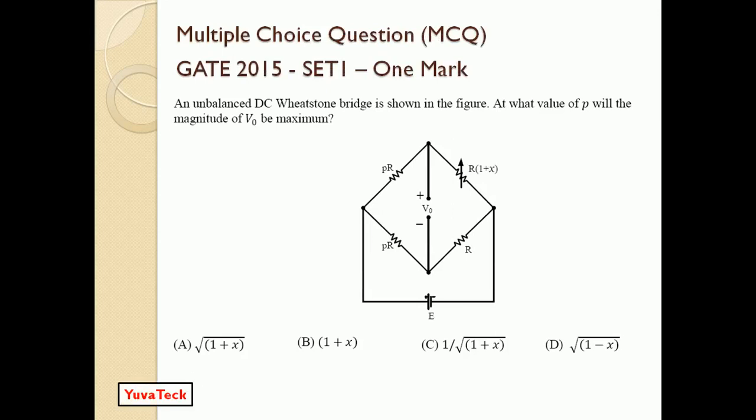They have given a Wheatstone bridge with resistance values provided. As a prefix to the resistance R, they have given the parameter rho — you can consider it as rho. We have to find out the value of that small rho.